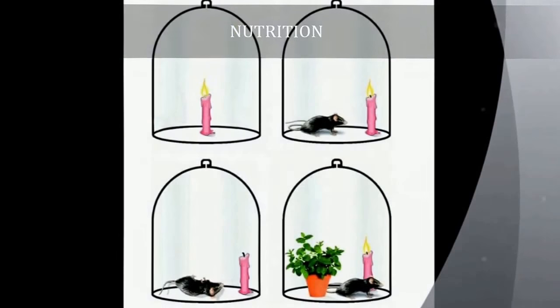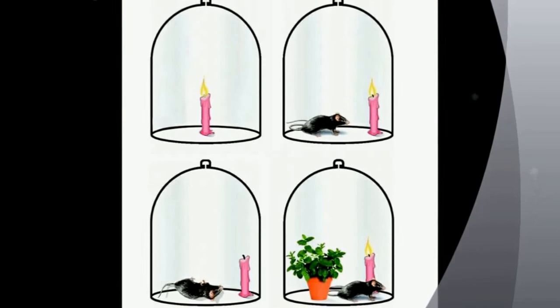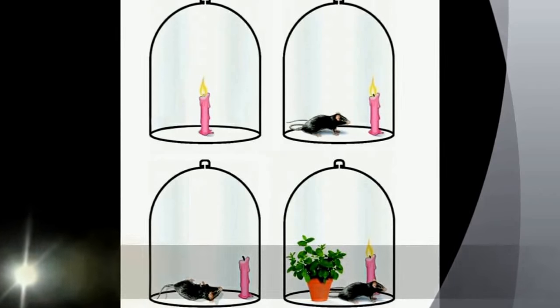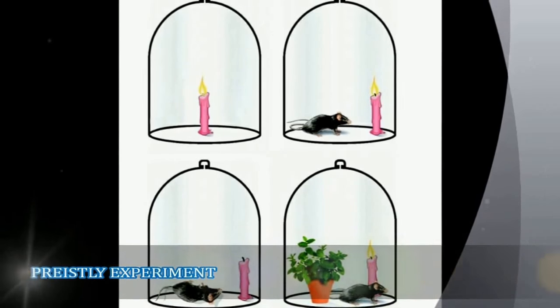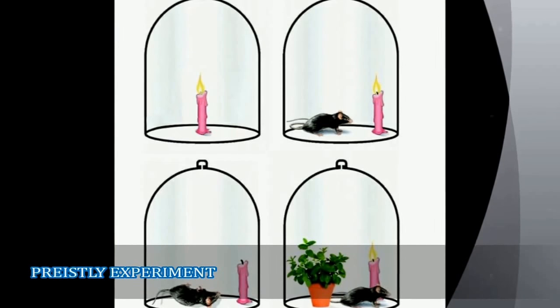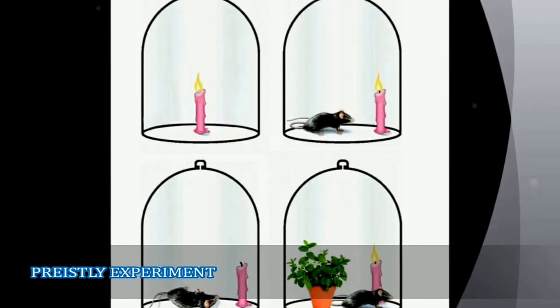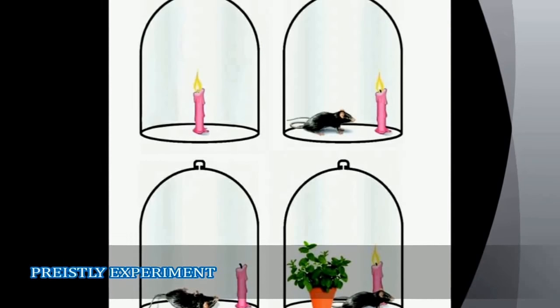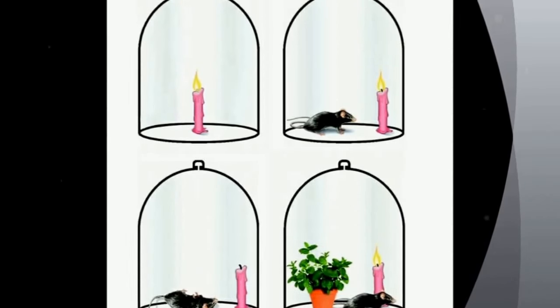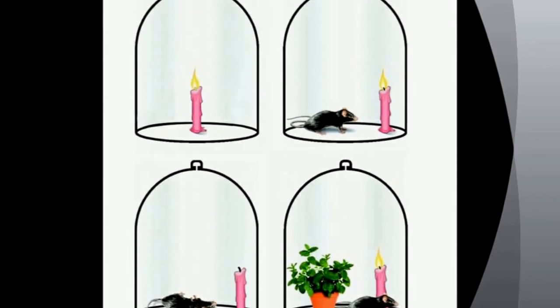Nutrition is of different modes. First photosynthesis. The experiment which you are observing now is Priestley's experiment to prove the gas which is releasing through plants is responsible for survival of animals and for burning of the candle. Later Lavoisier followed him and named the gas as Oxygen.